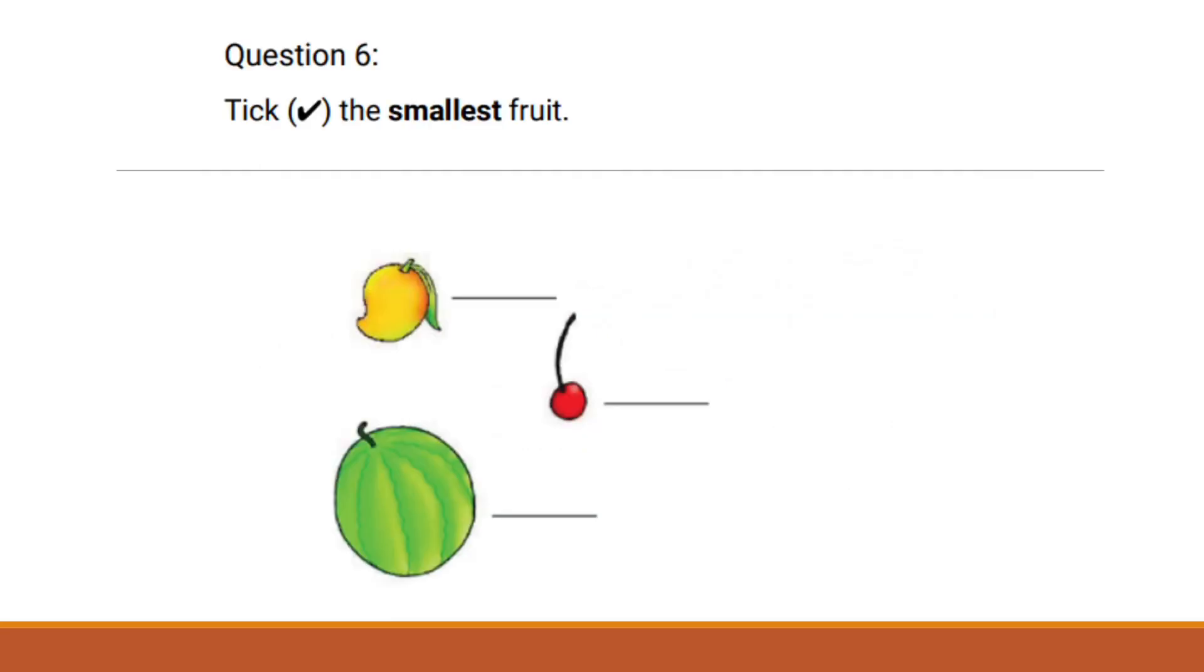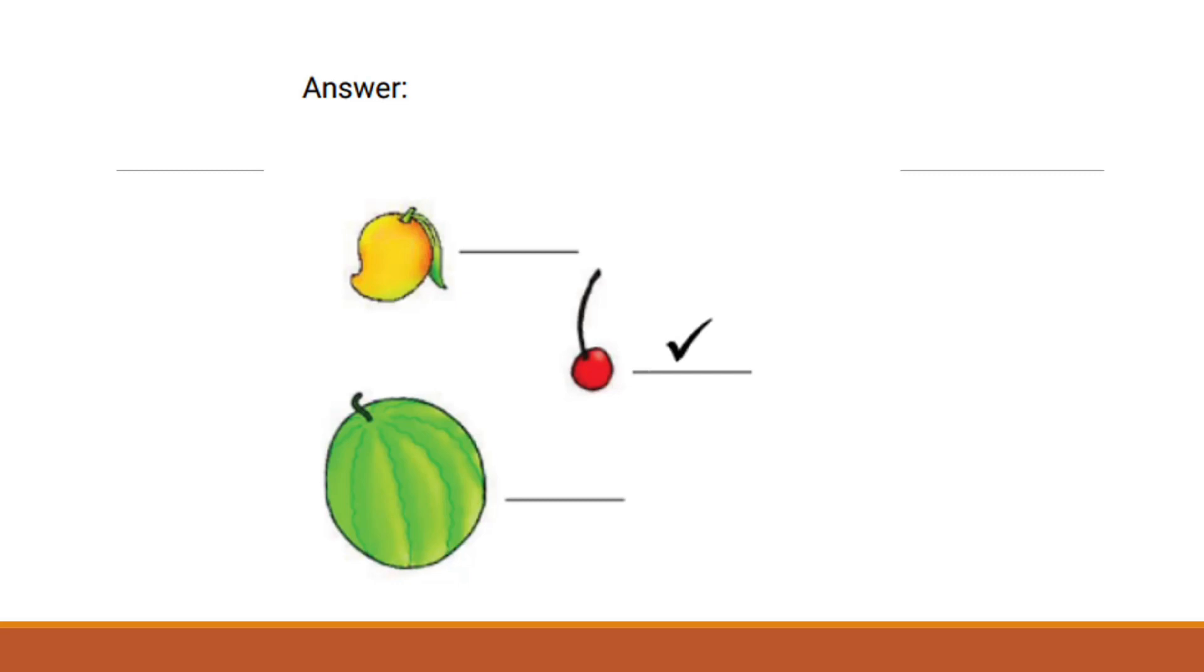Tick the smallest fruit out of mango cherry and watermelon. The smallest fruit out of mango cherry and watermelon is the cherry. Please tick the cherry to indicate that it is the smallest among these fruits.